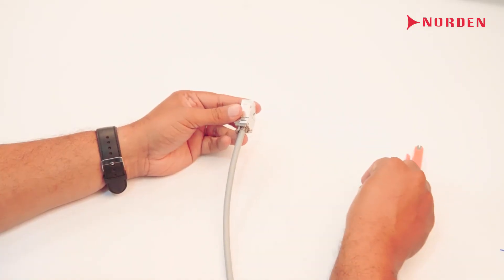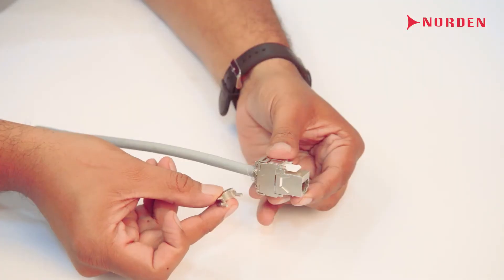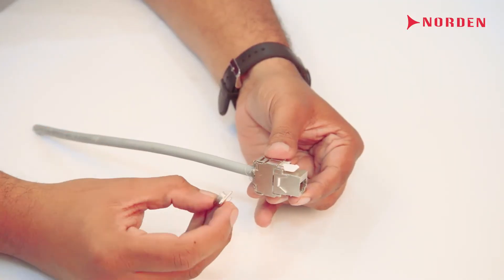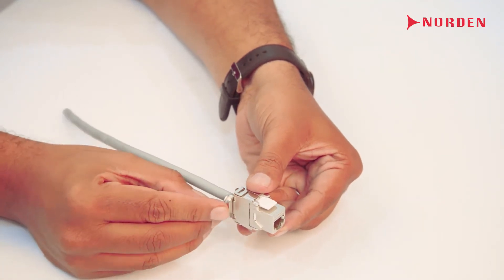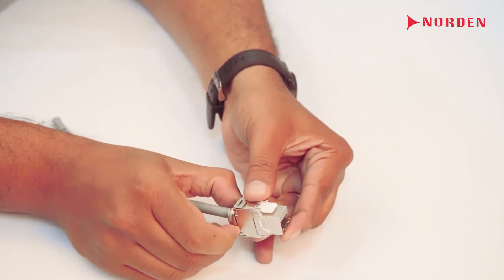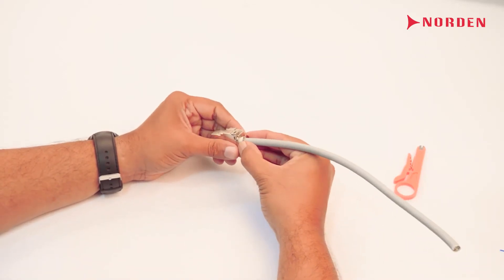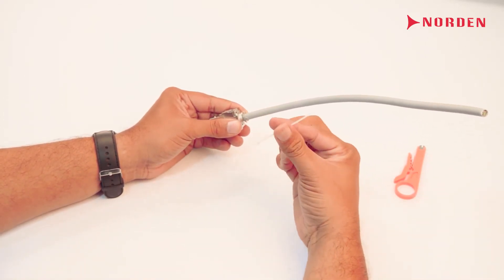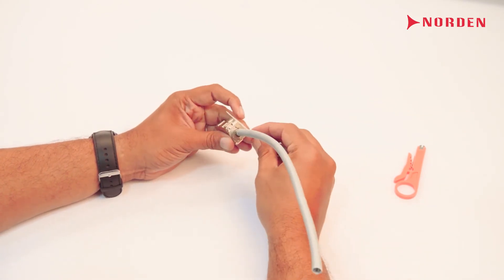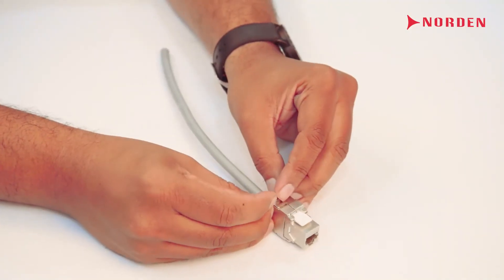Now insert the remaining part of the shielded keystone jack back. Finally, tighten the shielded keystone jack onto the cable using the cable tie provided.